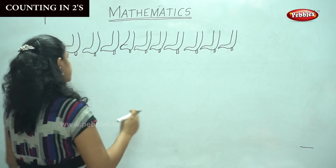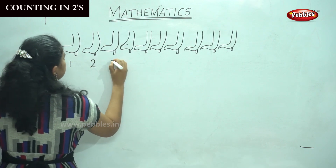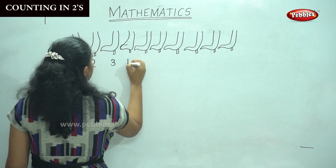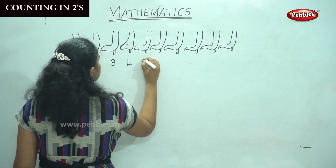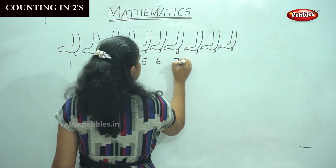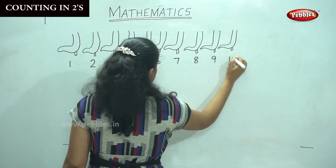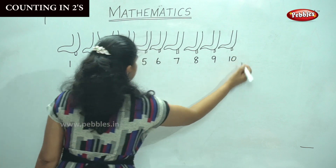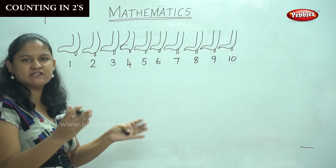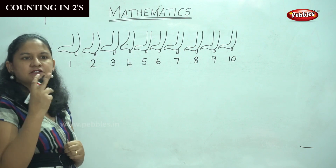So one, two, three, four, five, six, seven, eight, nine, ten. So I have ten pairs of shoes with me. Now we are going to put them in pairs, that is in twos.